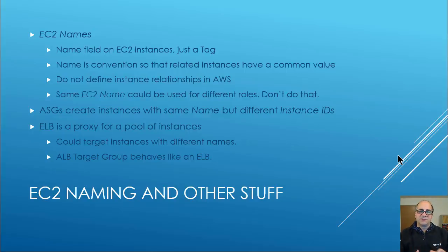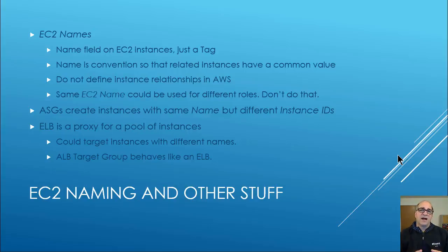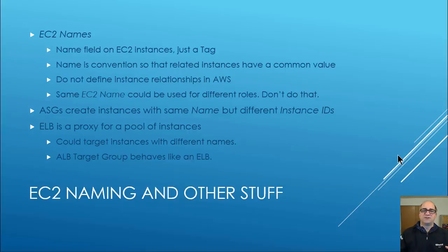ASGs create instances with the same name if you tell them to, but they create different instance IDs — each instance has its own unique instance ID while sharing the same name. The ELB is a proxy for a pool of instances. Those instances could actually have different names — for example, Western Region instances might have 'West' in the name and Eastern Region 'East' — but the ELB doesn't care. It just targets a set of instances.